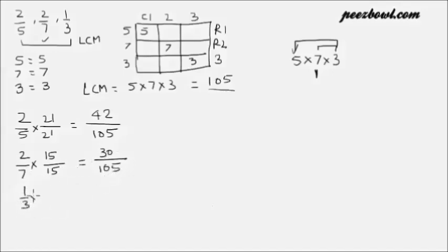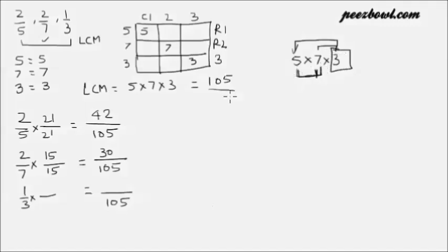For 1 upon 3, we make the denominator 105. We already have 3 at the denominator place, so what remains is 5 multiplied by 7, which is 35. 35 is the number we need to multiply with both the numerator and denominator. So 35 multiplied by 1 is 35, giving the result 35 upon 105.